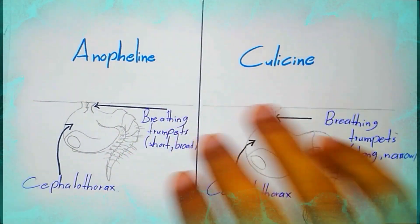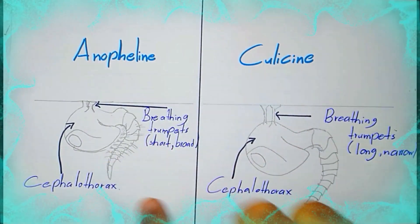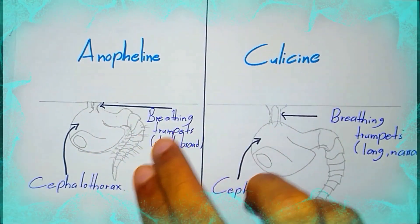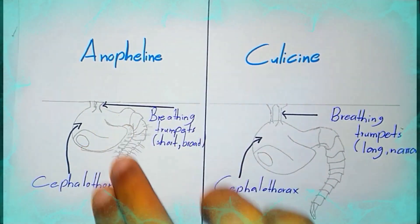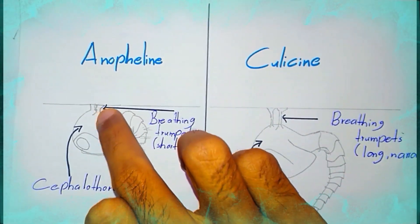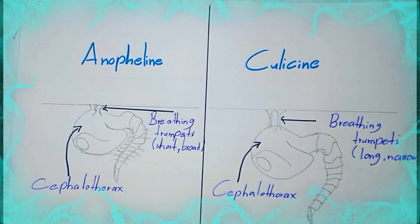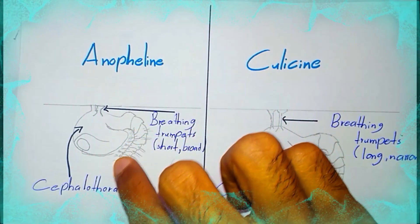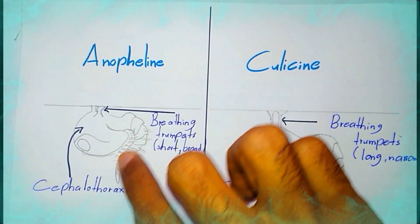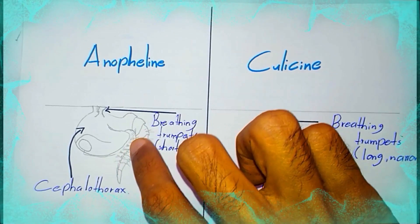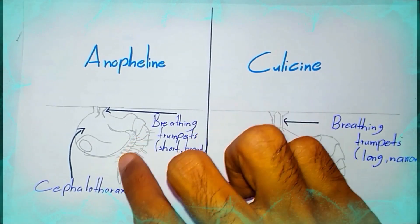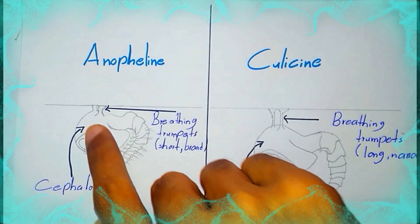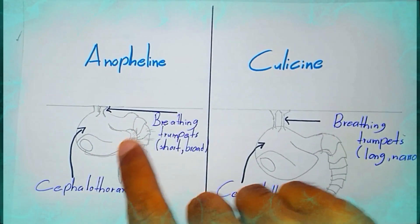This is anopheline and culicine mosquito pupae. In the anopheline mosquito, the pupae have short and broad breathing trumpets. The abdominal segments have well-developed palmatae, and the cephalothorax is close to the abdominal segments — you can see the cephalothorax close to the abdominal segments.